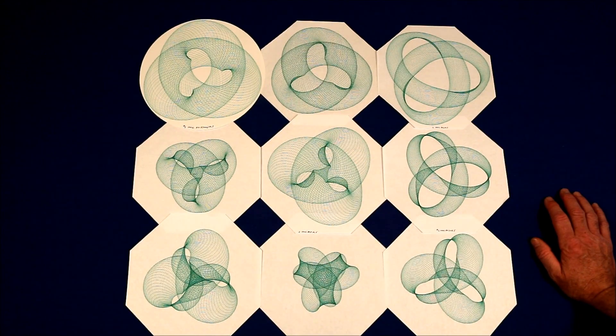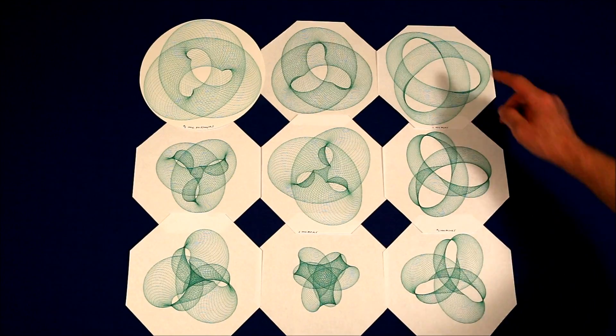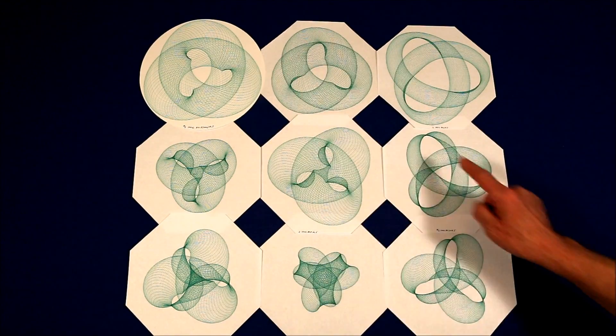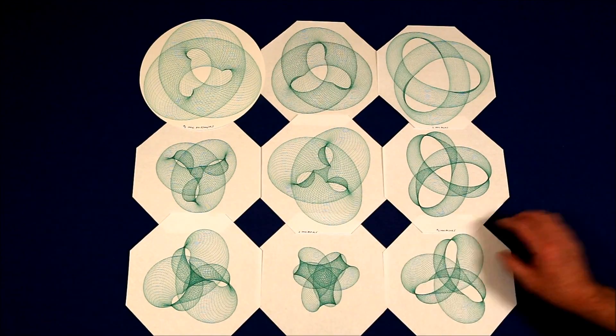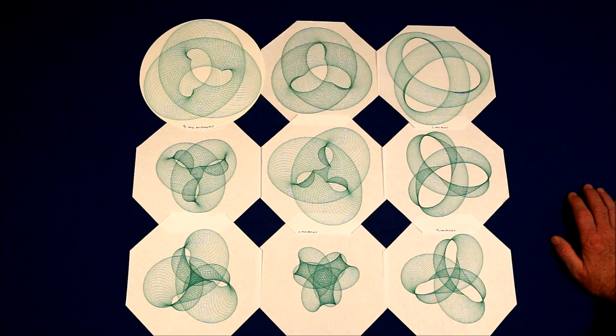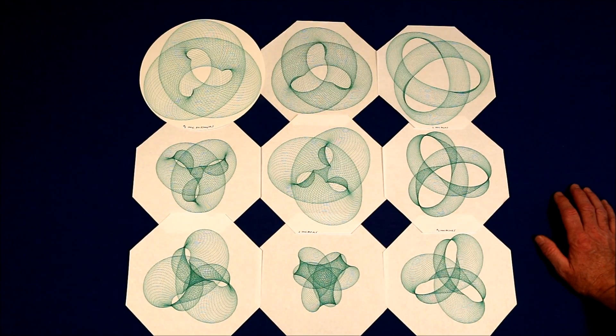This creates a three by three matrix. And you can see how the images evolve as those two variables are changed.